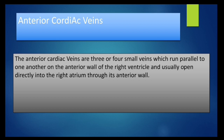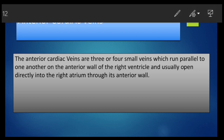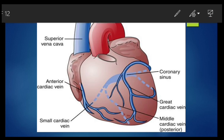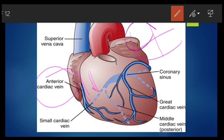The anterior cardiac veins are three or four small veins which run parallel to one another on the anterior wall of the right ventricle and usually open directly into the right atrium through its anterior wall. As seen in the diagram, these three or four small veins run parallel and directly open into the right atrium through the anterior wall.